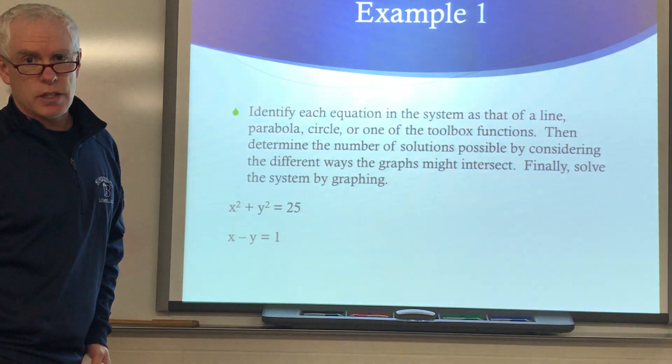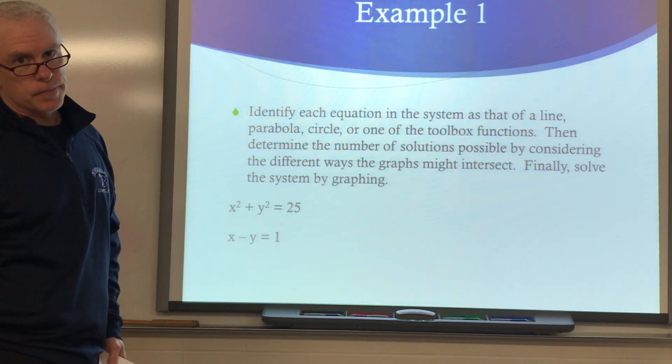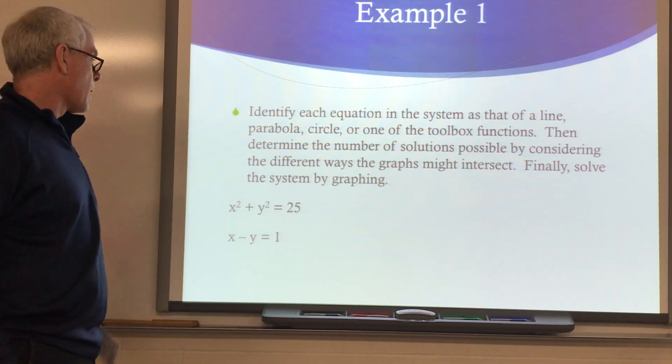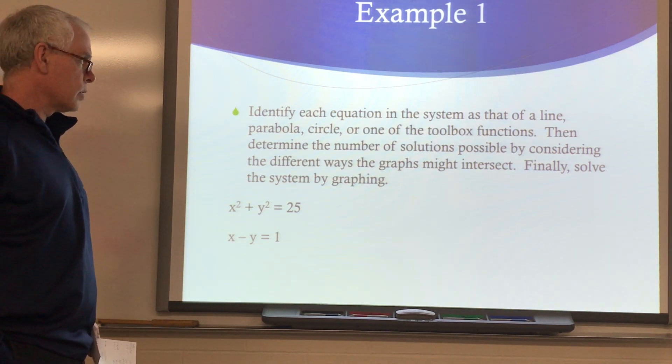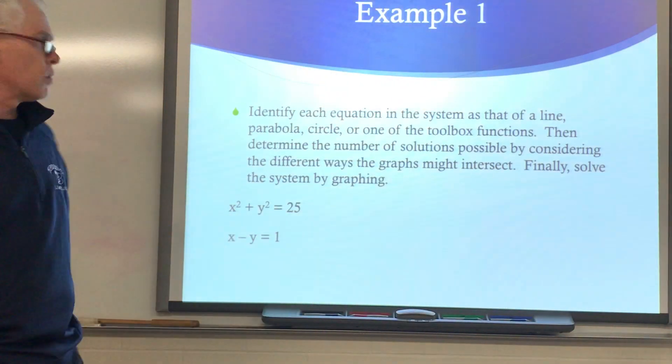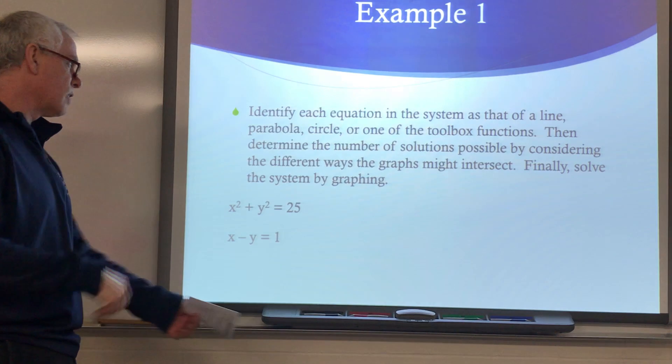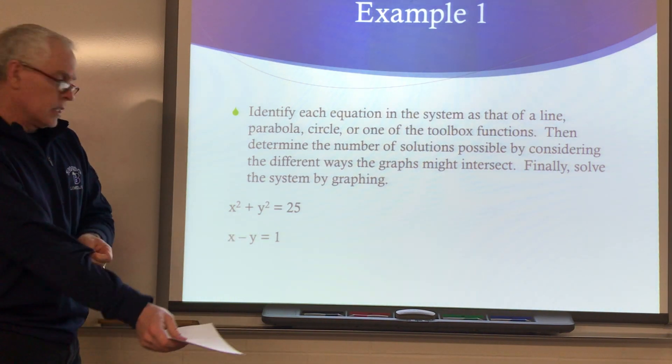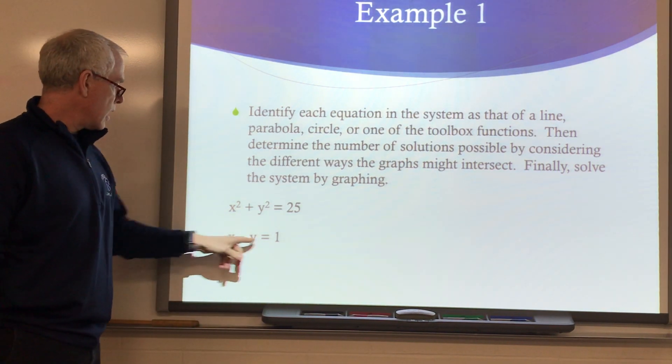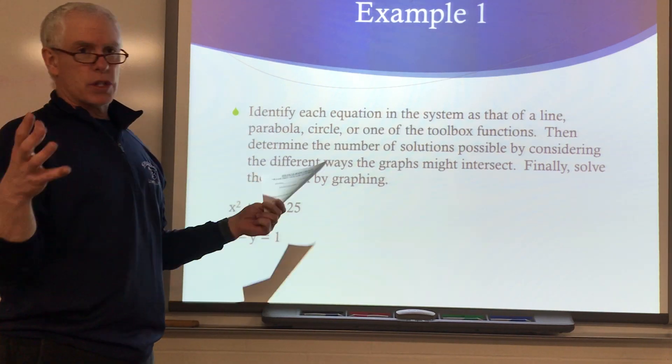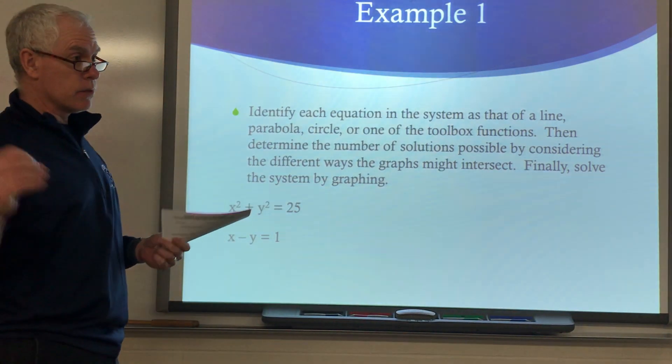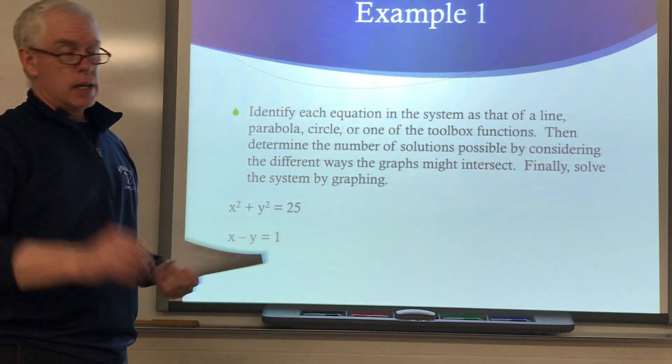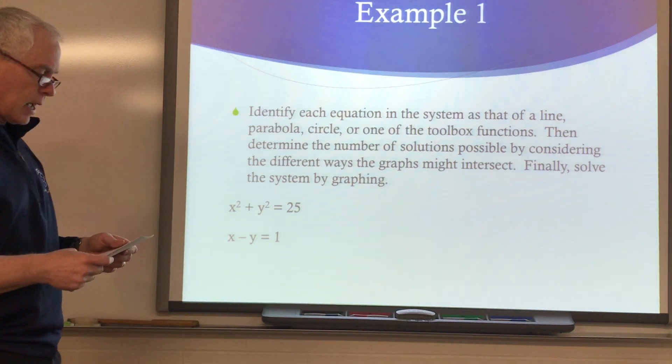Now we're going to be solving systems of equations today, like we have the last couple days, except they're going to be non-linear, so you might have some x-squares and y-squares in there, but the concept is the same. Identify each equation in the system as that of a line, parabola, circle, or one of the toolbox functions. Then determine the number of solutions possible by considering the different ways the graphs might intersect. Finally, solve the system by graphing. This is the equation of a circle centered at (0,0) with a radius of 5, and x - y = 1 looks like a line. A line might never touch the circle, so it could have 0 solutions. It might touch it once, or it might cross it twice. So 0, 1, or 2 solutions, and we're going to look at that scenario here today.